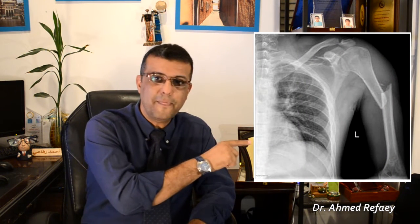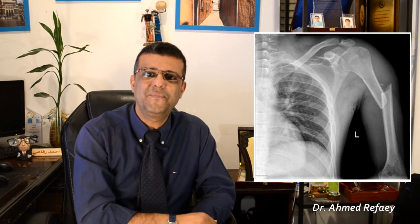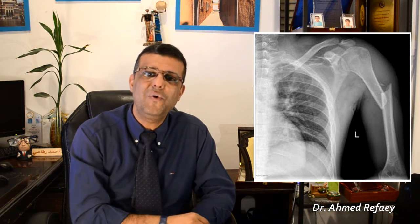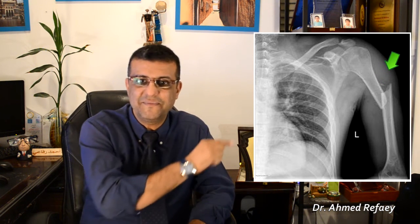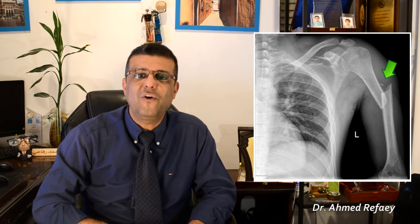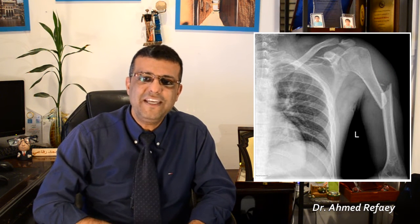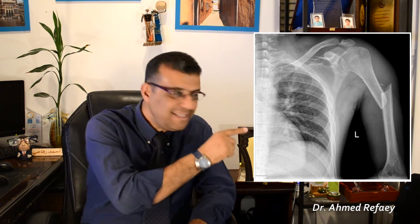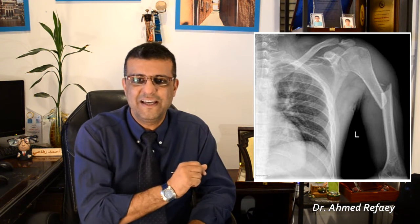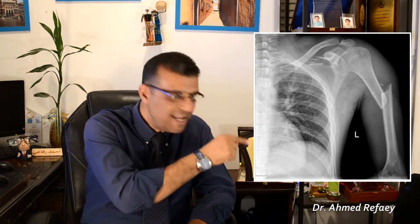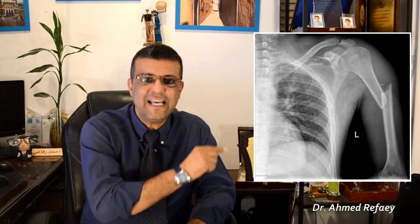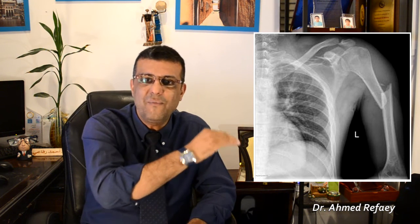The last example is case number seven. It is a complete, oblique, comminuted fracture because there are more than two bone fragments — there is a very small fragment visible here. So this is a complete, oblique, comminuted fracture of the mid-shaft of the left humerus with significant shortening, as well as medial angulation, because the distal bone fragments angulated medially.